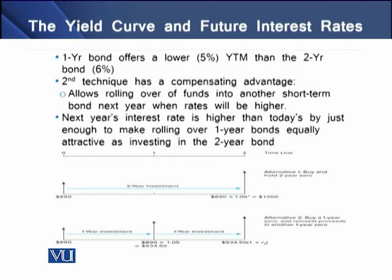In the graph, the first panel shows a timeline from period 0 to 1 and 1 to 2 — a two-period timeline. The second panel depicts strategy one with a standalone two-year zero coupon bond. The third panel at the bottom of the screen shows strategy two with two consecutive one-year investment bonds.